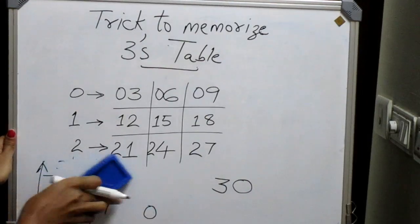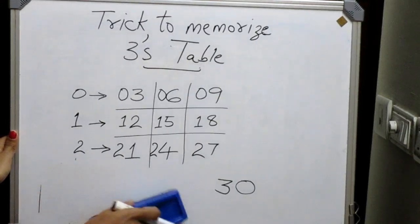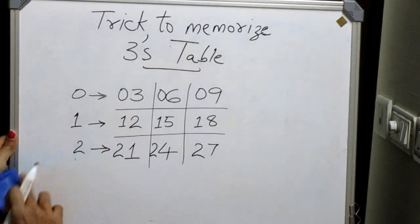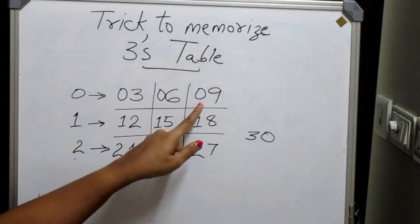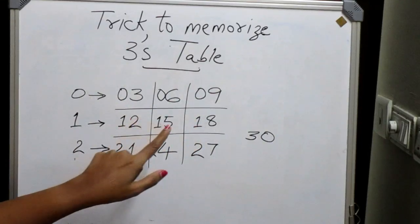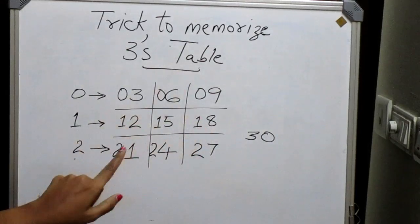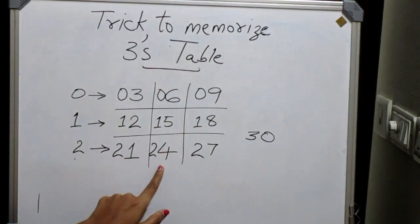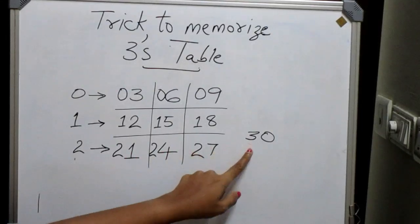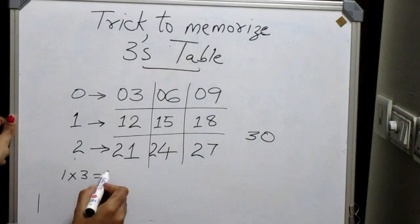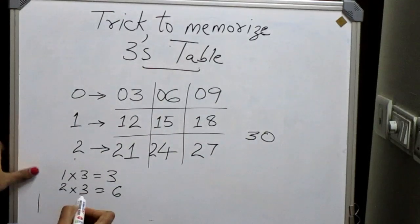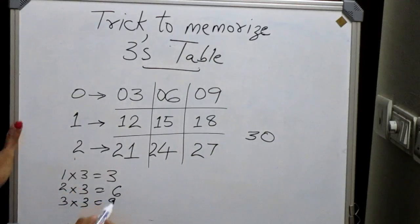So our table becomes: we can write the table of 3 as 1 into 3 equals 3, 2 into 3 equals 6, 3 into 3 equals 9 — that is our first row. Then 4 into 3 equals 12, 5 into 3 equals 15, 6 into 3 equals 18 — that is our second row.